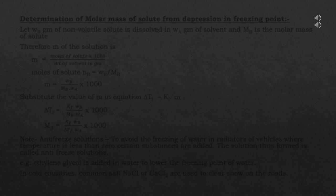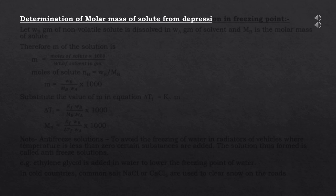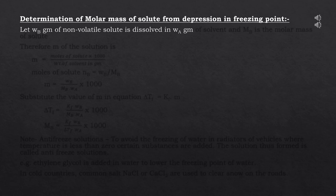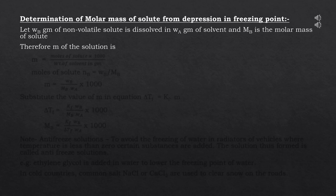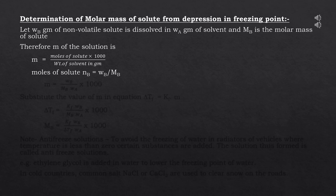Next, we determine the molar mass of the solute from depression in freezing point. Let Wb grams of non-volatile solute be dissolved in Wa grams of solvent, and let Mb be the molar mass of the solute. Molality m = (moles of solute / weight of solvent in grams) × 1000. Moles of solute Nb = Wb / Mb. So molality becomes m = (Wb / Mb × Wa) × 1000.